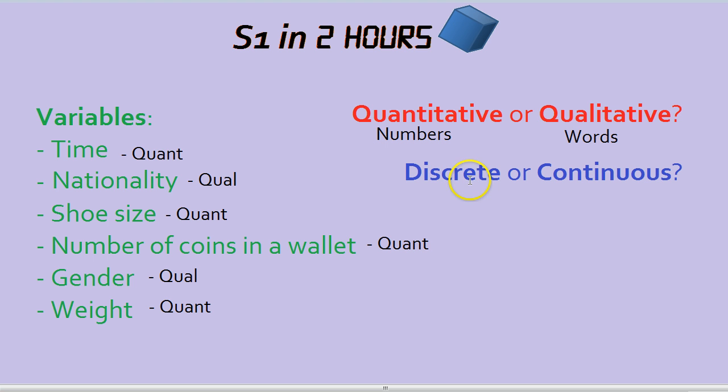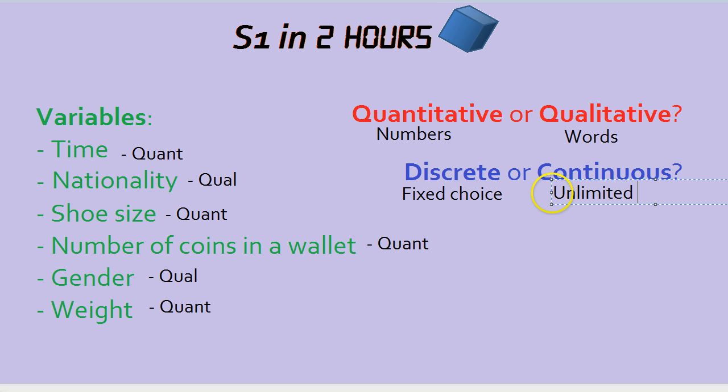What about a trickier one, the difference between discrete and continuous? I like to remember it like this. With discrete variables, you have a fixed choice of different options, different numbers. Whereas with continuous, you could have potentially unlimited decimals. That's the key difference between discrete variables, where it's fixed, and continuous variables, where you could go on for unlimited decimals.